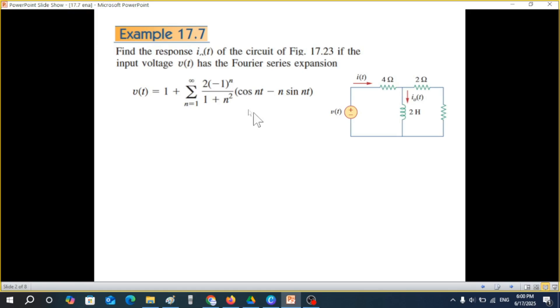This is the question. Find the response I0(t) of the circuit. So this is the circuit given, and I0(t) is the current through the inductor. If the input voltage V(t) has the Fourier series expansion, the input voltage has been represented by a Fourier series. I hope you remember that any periodic signal which is of any shape could be represented by Fourier series. So this represents that signal.